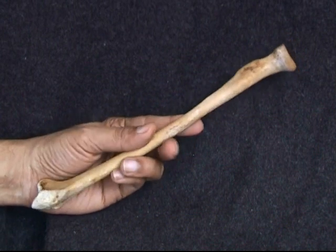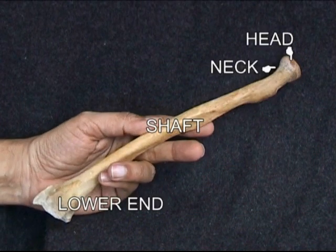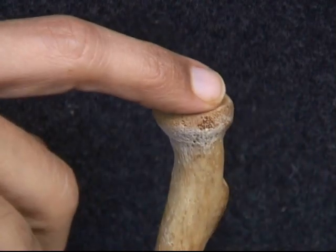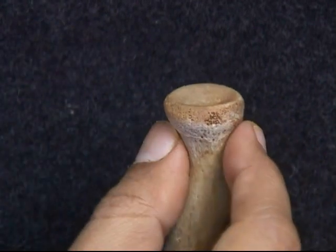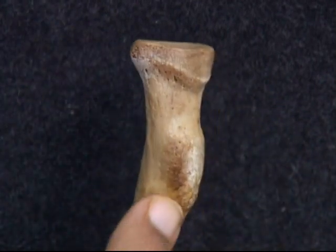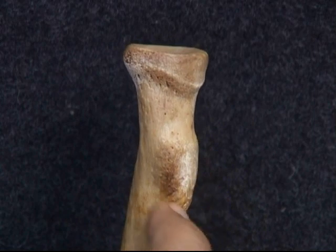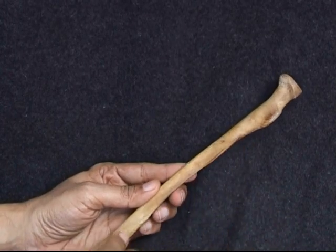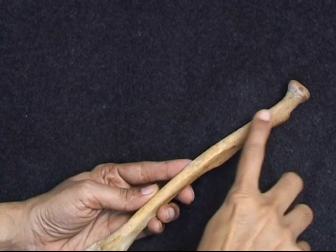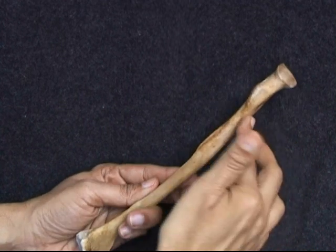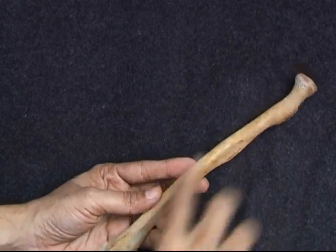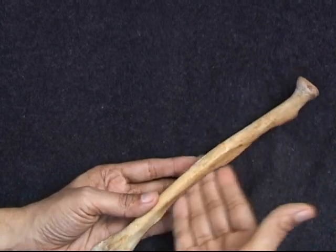This is the left radius, with a head, neck, shaft, and lower end. The disc-shaped head has a shallow cup-like upper surface, a narrow neck, and the radial tuberosity medially. The shaft has three borders: a sharp interosseous border medially, an anterior border, and a posterior border, and three surfaces: anterior, lateral, and posterior.